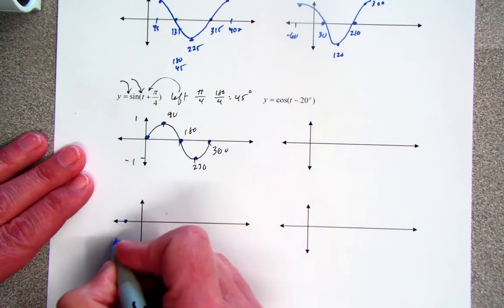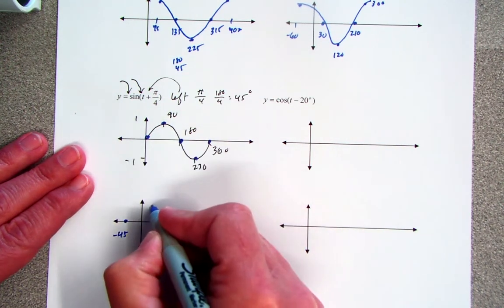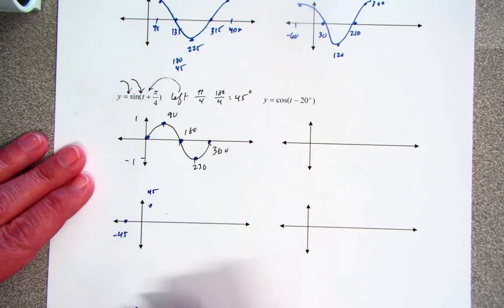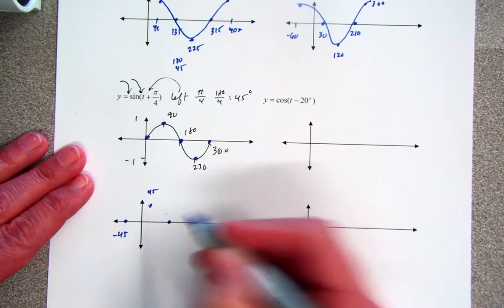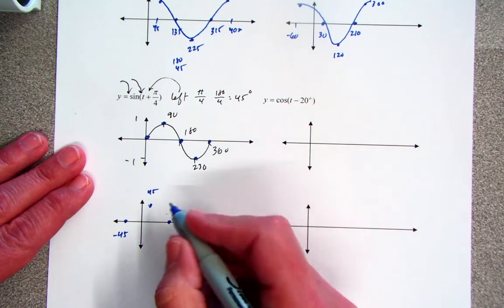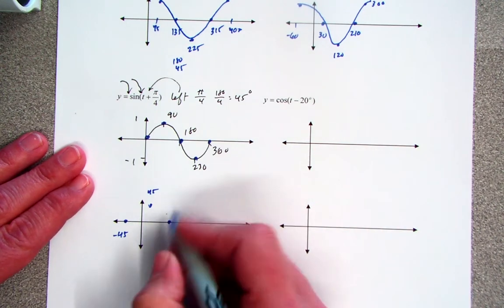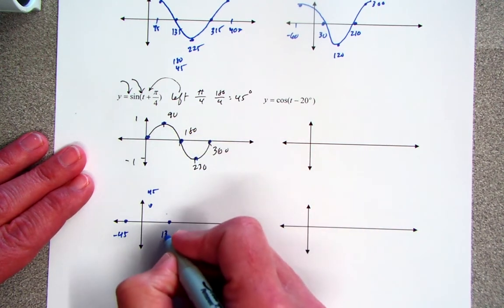So instead of starting at 0, it's 45 over. Instead of being at 90, I shift it 45, which puts it at 45. 180 is where it hits the axis, but 45 less than that. So 180 minus 45 is 135.